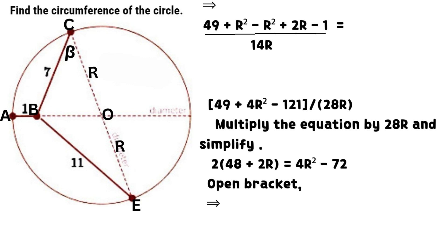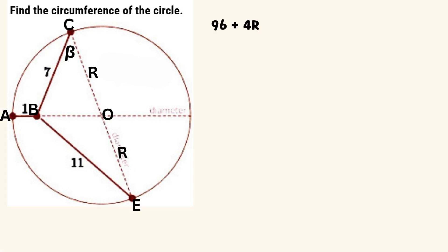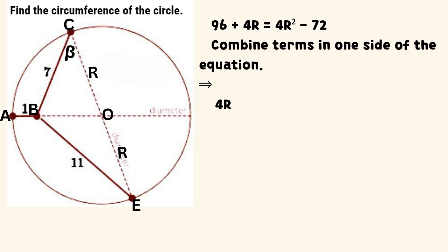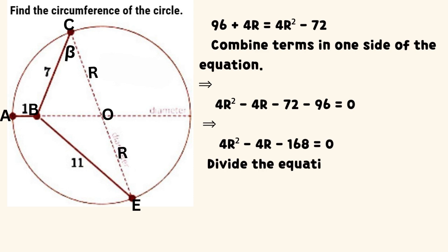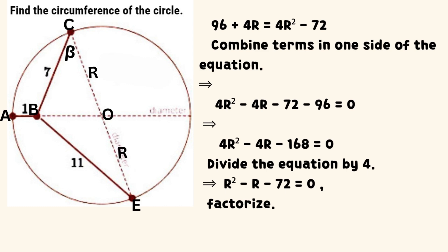Open the bracket. The sum of 96 and 4 times R equals 4 times the square of R minus 72. Combine terms on one side of the equation and simplify. We have that 4 times the square of R minus R, minus 4 times R minus 168, equals 0. Divide the equation by 4. It signifies that the square of R minus R minus 72 equals 0.